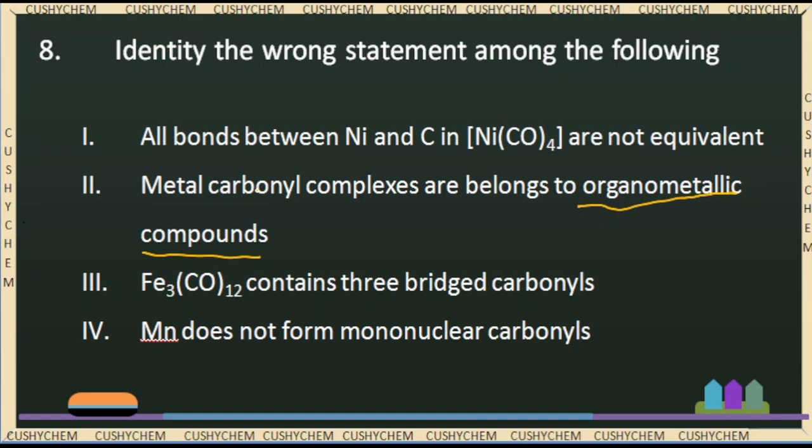Even the Grignard reagent RMgX is an organometallic compound because the metal is directly bonded to carbon. So this is a correct statement. The metal carbonyl complexes belong to organometallic compounds — this is the right statement. And Fe3(CO)12 contains three bridged carbonyls. We can see the structure and identify the right and wrong answers from there.